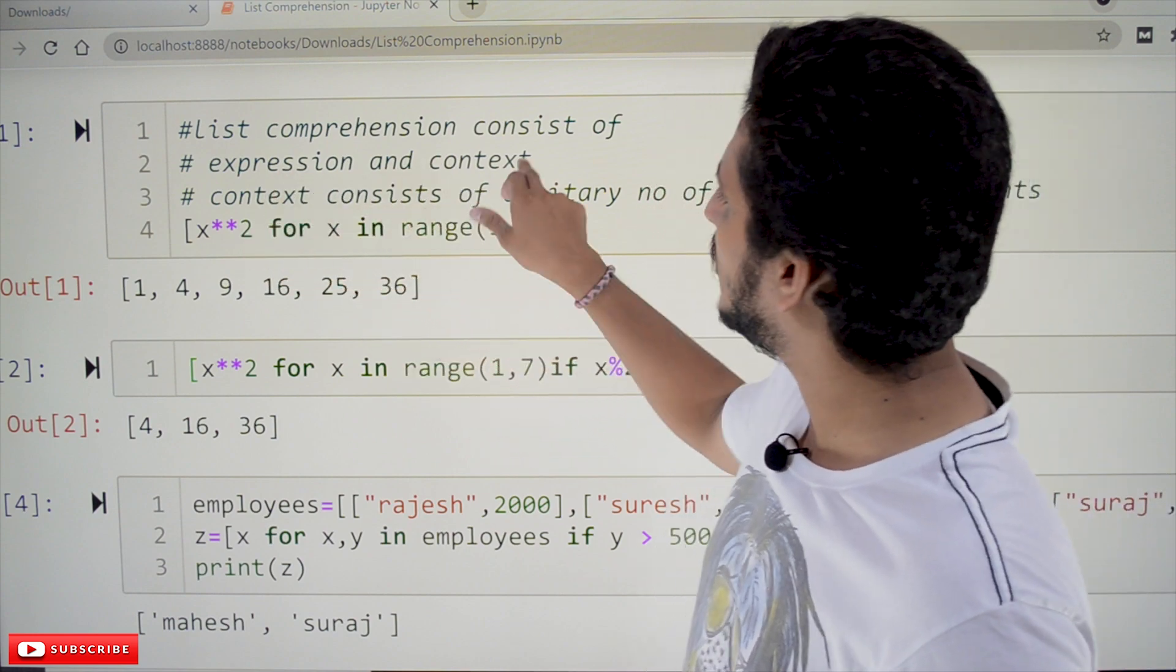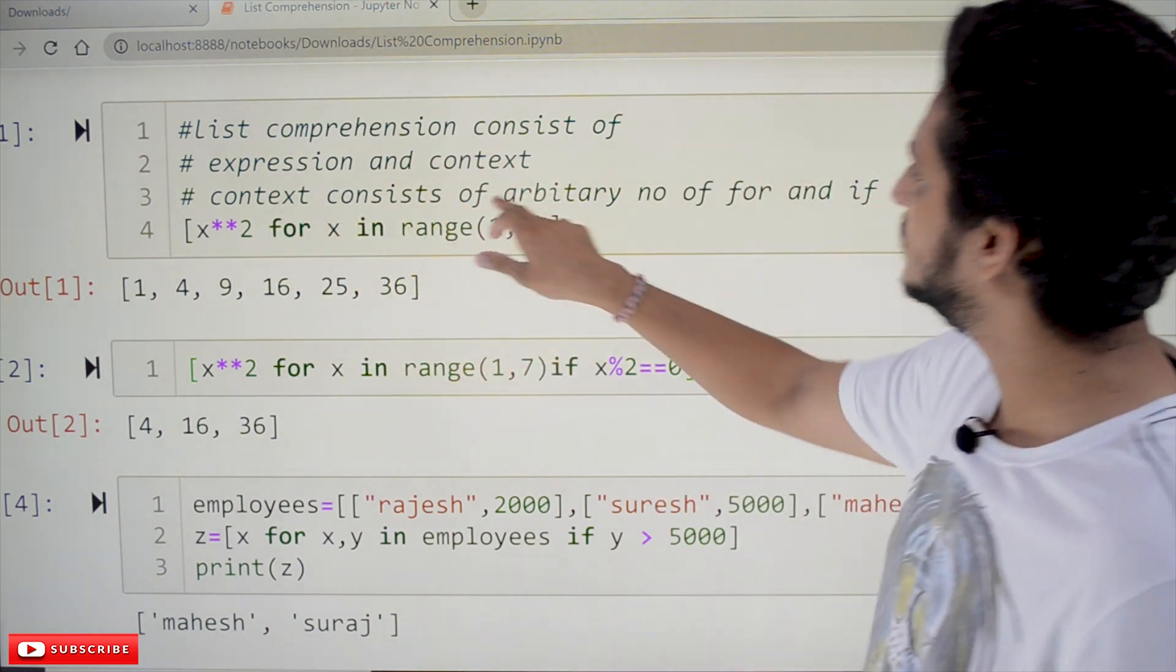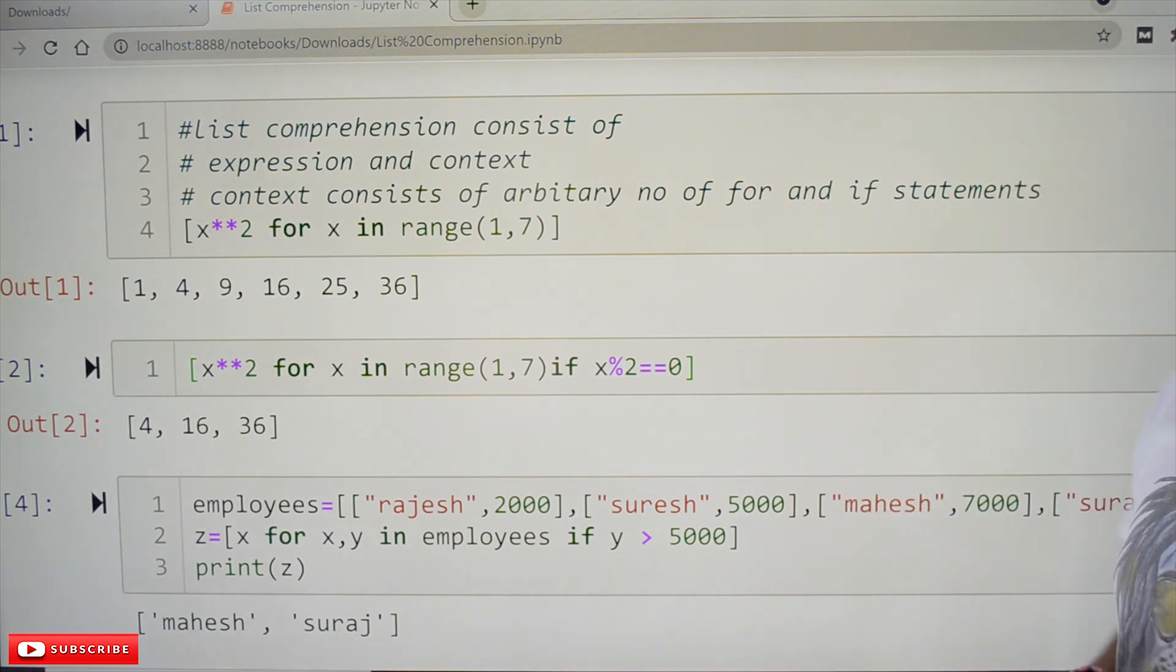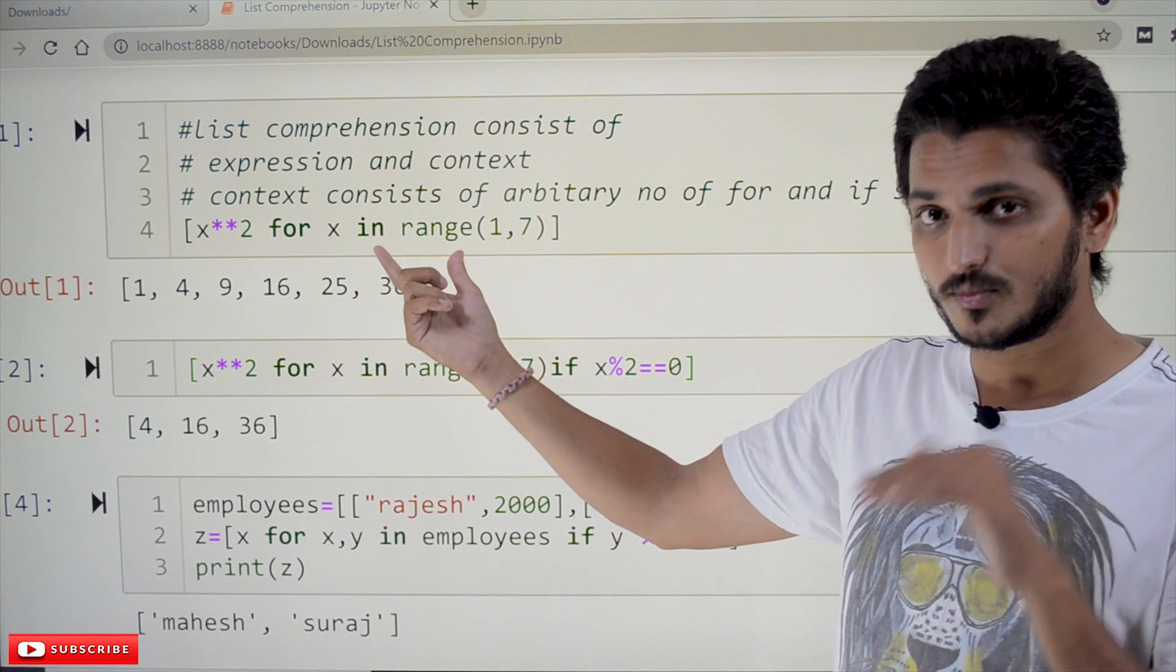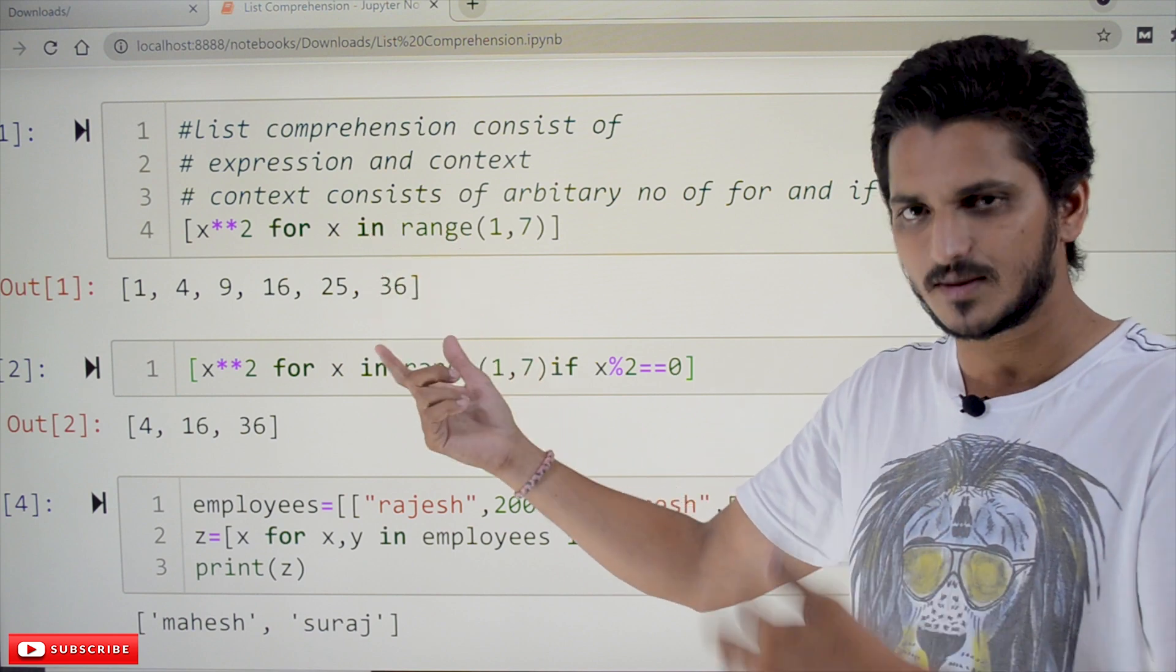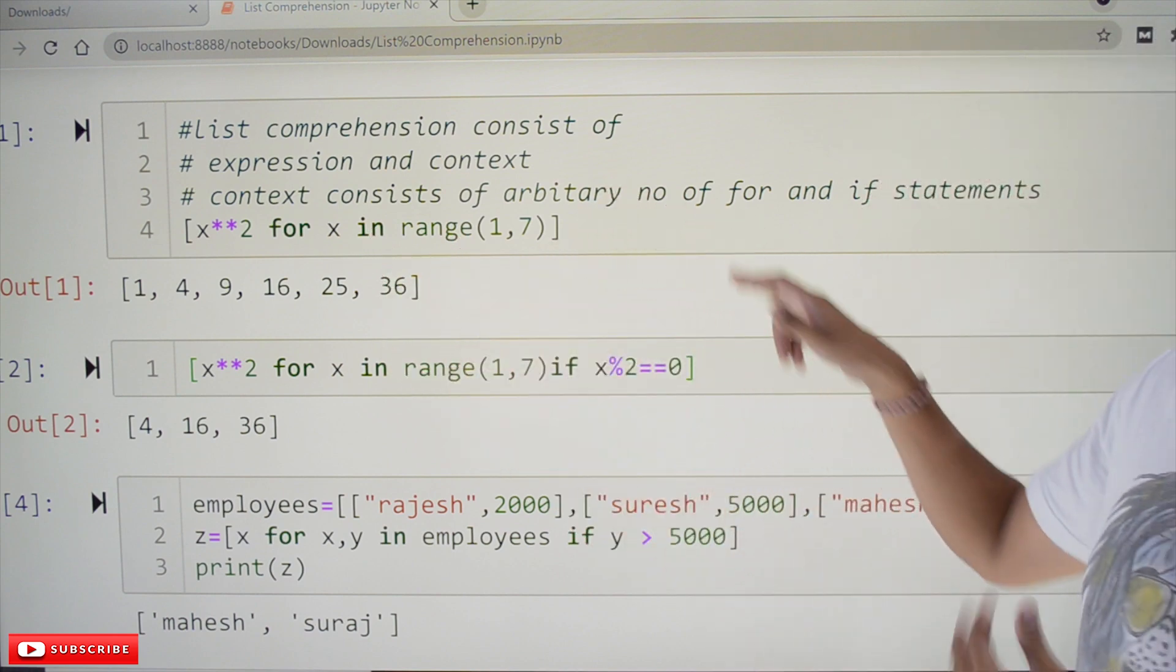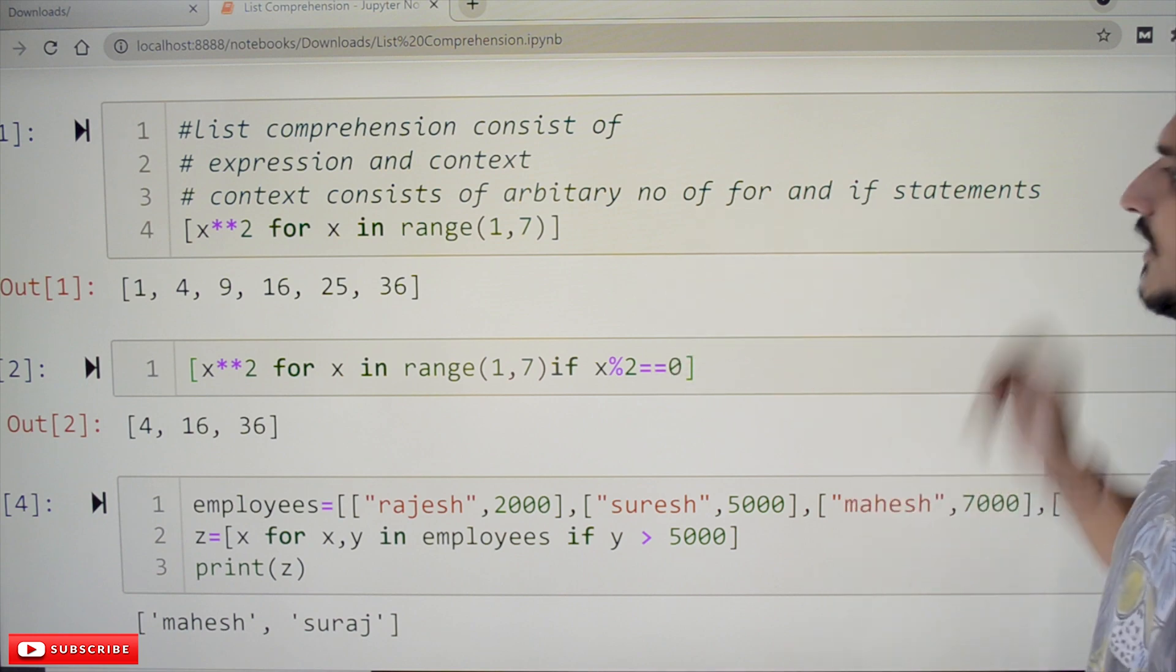And expression and context. Context consists of arbitrary number of for and if statements. Here we have written only one for loop and we did not mention any if statement. In our coming examples, you will understand arbitrary means any number of for and if statements.